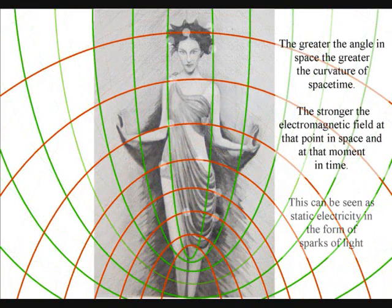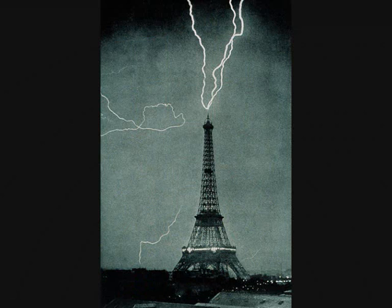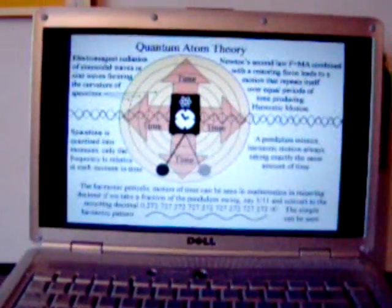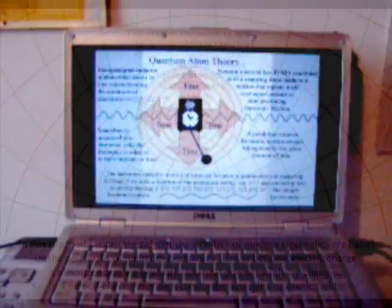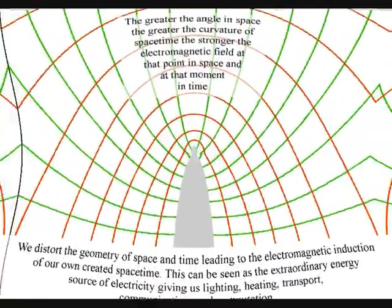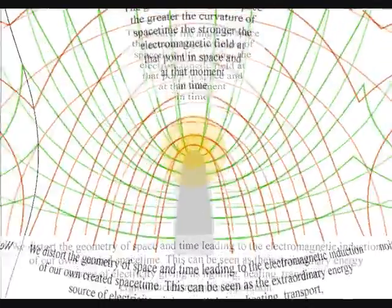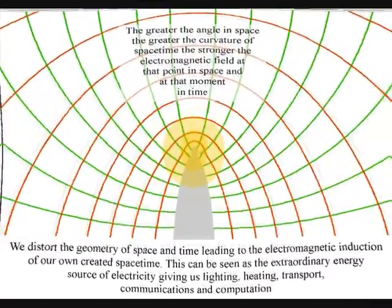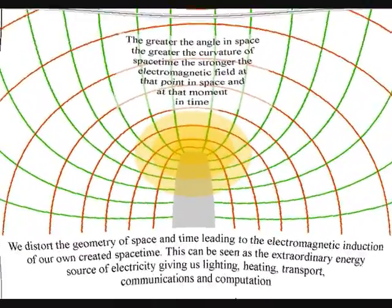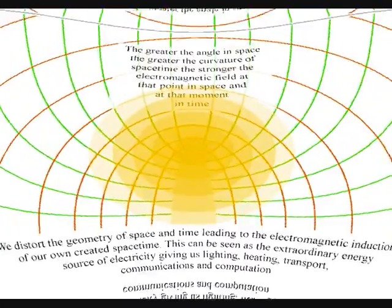This can be seen as sparks of light associated with static electricity. The atoms will even distort the geometry of spacetime, creating electrostatic discharge in the form of lightning. In this theory, it is only logical that the wonders of modern electronics are based on the paradoxes of quantum mechanics. This is because electric charge is quantized, and we generate electrical power mainly by changing magnetic fields or moving a conductor through a magnetic field. This will distort the geometry of space and time, leading to the electromagnetic induction of our own created spacetime — in other words, electricity.